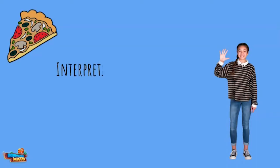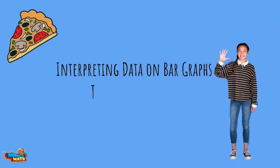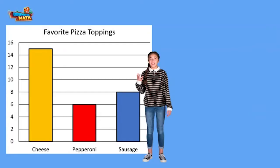Back again to discuss interpreting data on bar graphs, this time with two-step problems. Today we are taking on challenges with two-step problems using bar graphs. It is a good strategy to start with labeling the value of the bars on the graph, so we don't have to figure it out when we are answering the tougher questions.